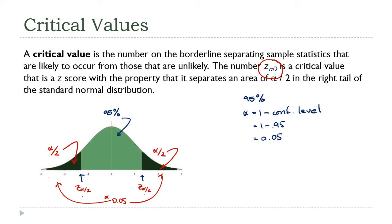Looking at the example: what would z-alpha-over-two be? If alpha is 0.05, then alpha over two is 0.025. Now going to the standard normal distribution table — I'm given an area and I want to find the z-score — look up 0.025 in the body of the table and get your answer from the top row and left-hand column. The z-score that corresponds to an area of 0.025 to the left is negative 1.96. The upper one, by symmetry, is positive 1.96. Those are the critical values, or z-alpha-over-two values, for a 95% confidence level.